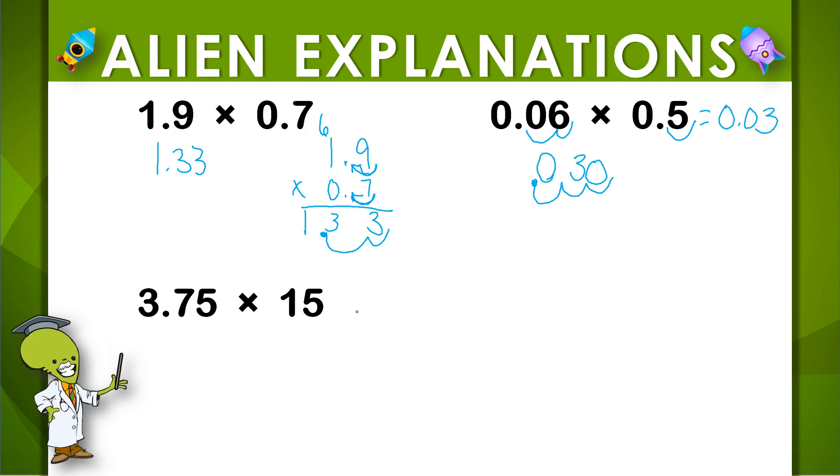In this last example, I've got my product. I just multiplied it the same way I would have 375 times 15, but I've got to remember to count my decimal places from my last digit, so it goes over 1, 2. So 3.75 times 15 is the same as 56.25.